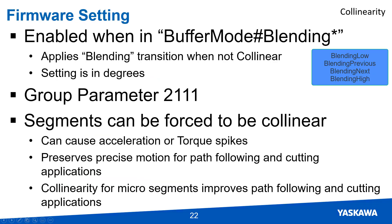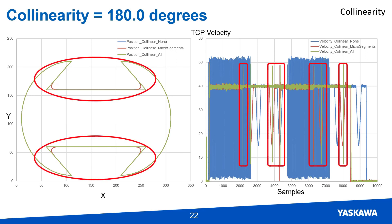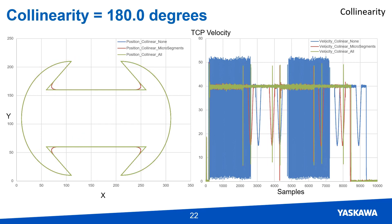The collinearity setting can be set larger so that every segment is seen as collinear, which can be useful to a certain extent when working with path following and cutting applications. Using the same example, if the collinearity is set to 180 degrees — larger than all the segment angles in the part file — no transition segments are added. The velocity during the six longer straight segments changes very quickly to create a sharp corner, requiring more acceleration. The motion path is preserved, which is acceptable for path following and cutting as long as the tool head is rigid enough not to oscillate with the acceleration changes.